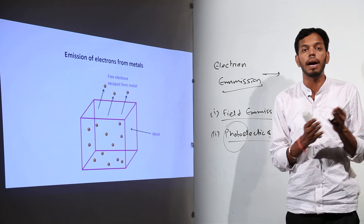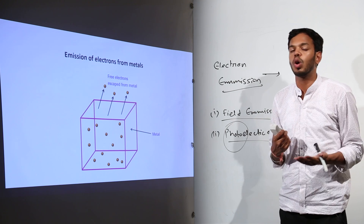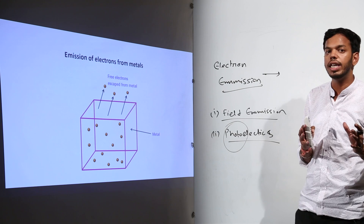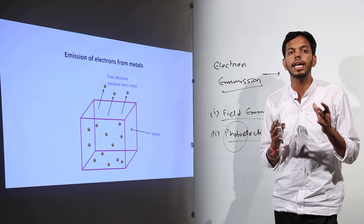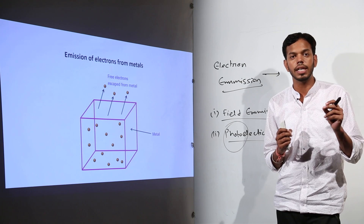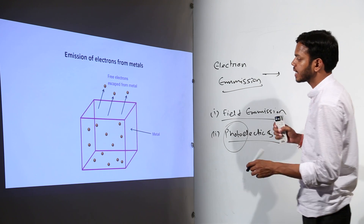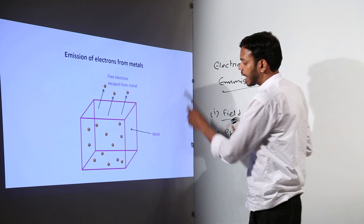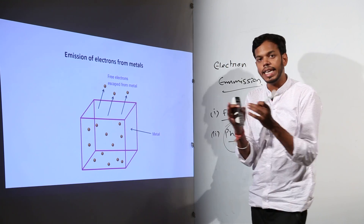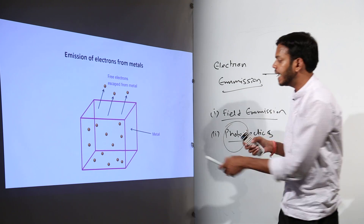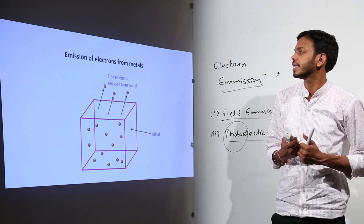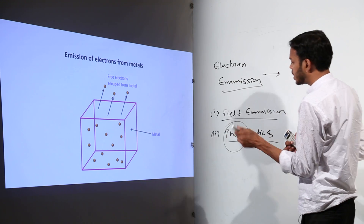If these photons are projected towards the metal, the electron will gain whatever energy is in the photon and it will escape the metal surface. That was the second effect. The third one, which is our chapter, is called thermionic emission.